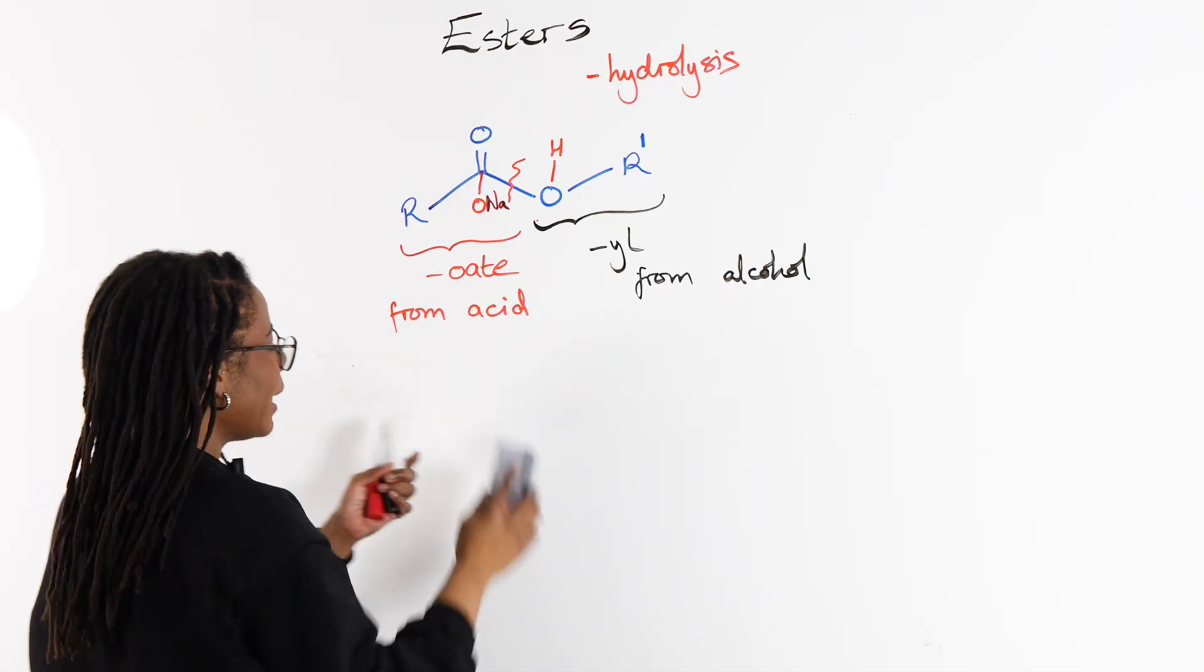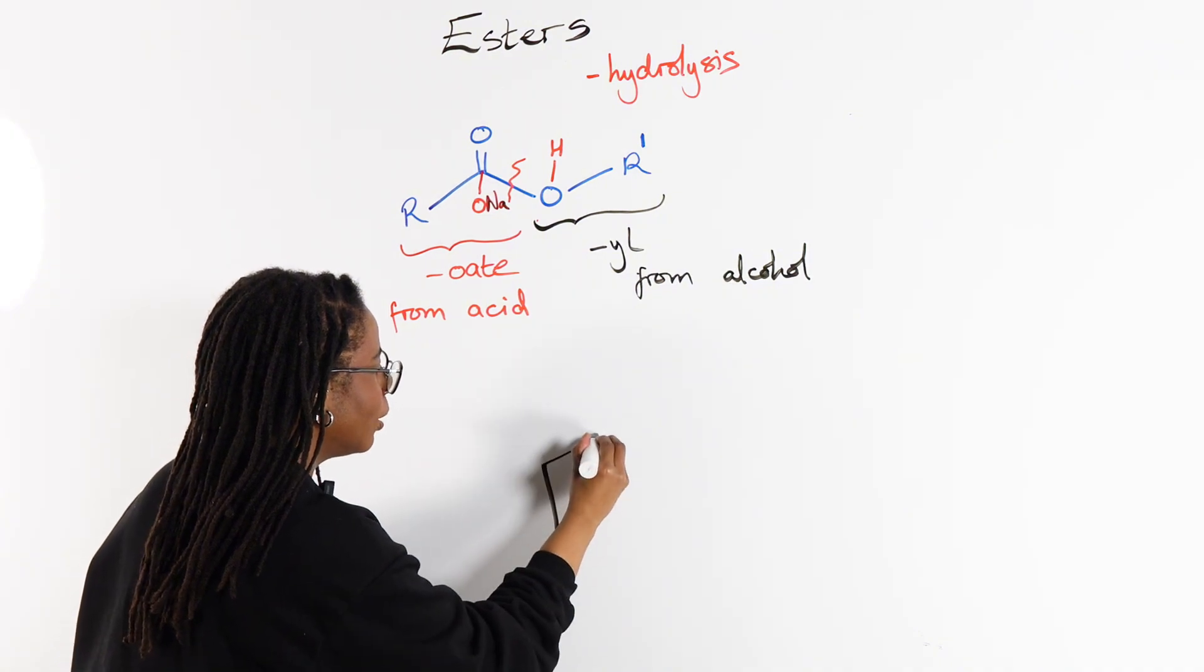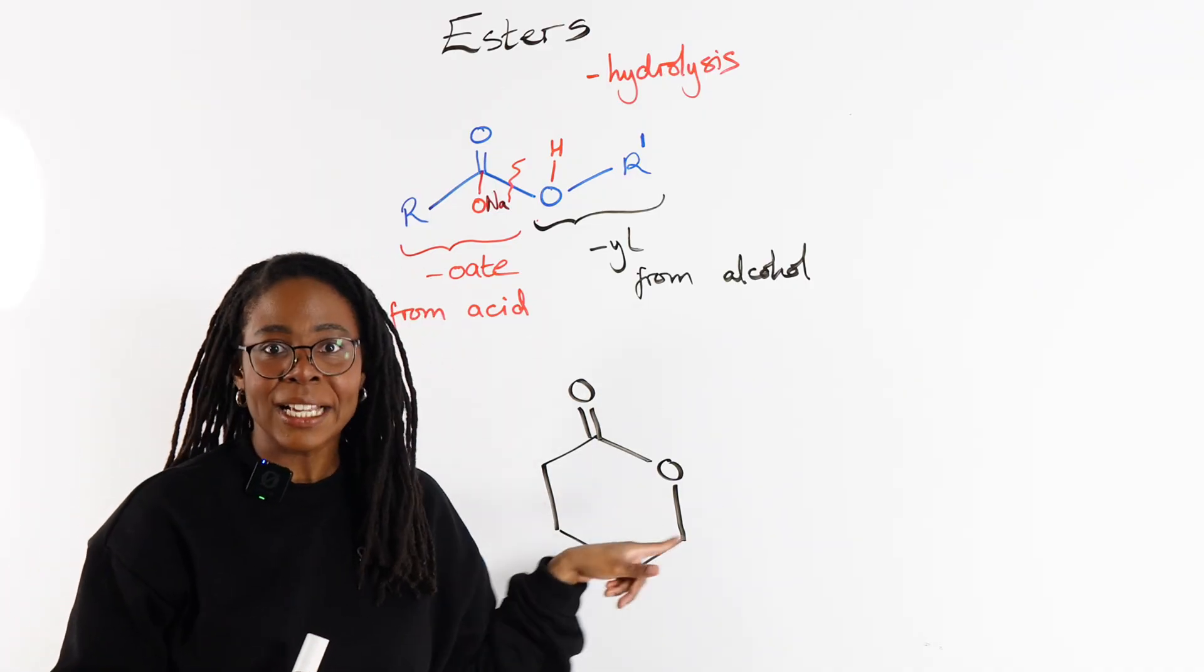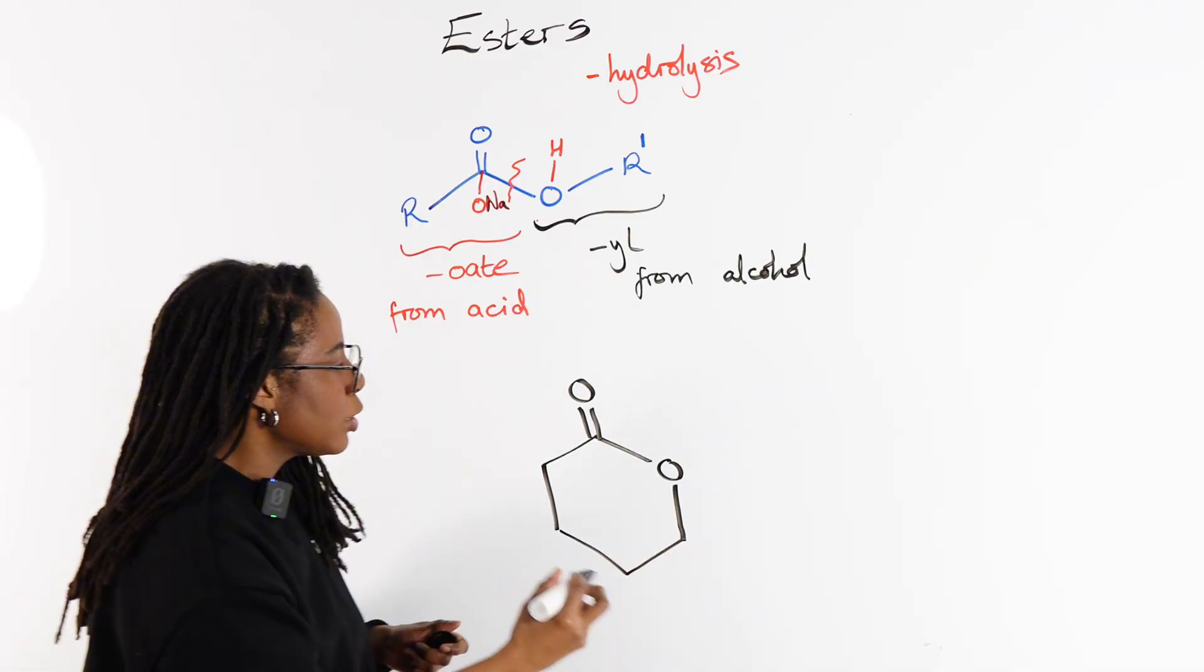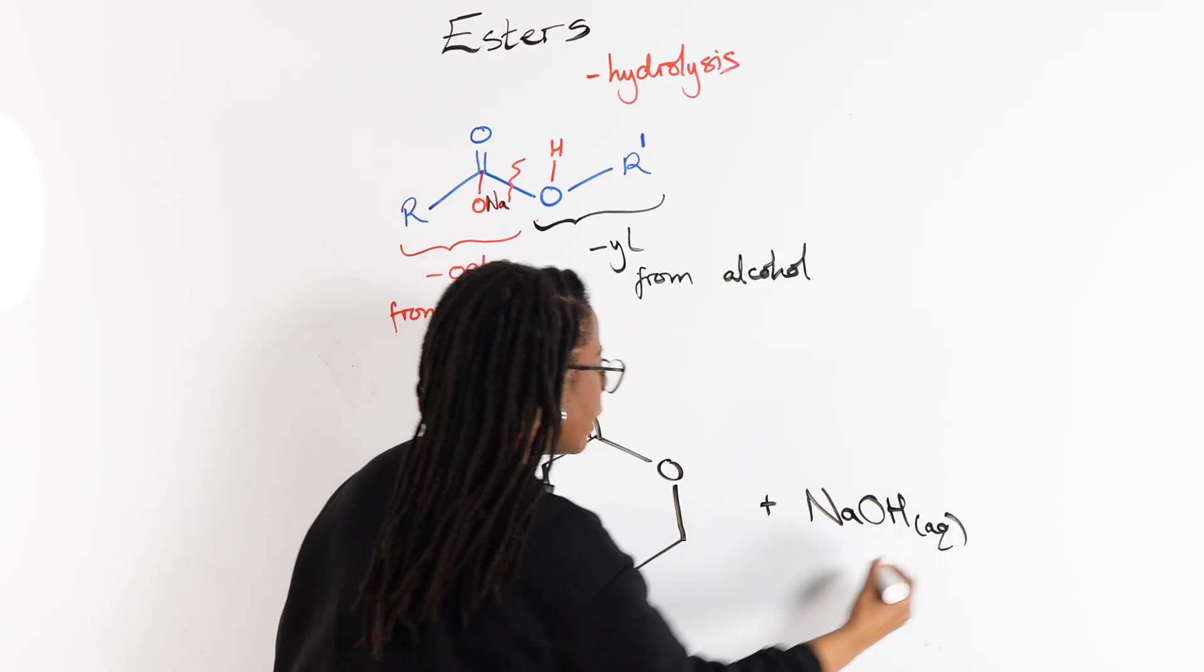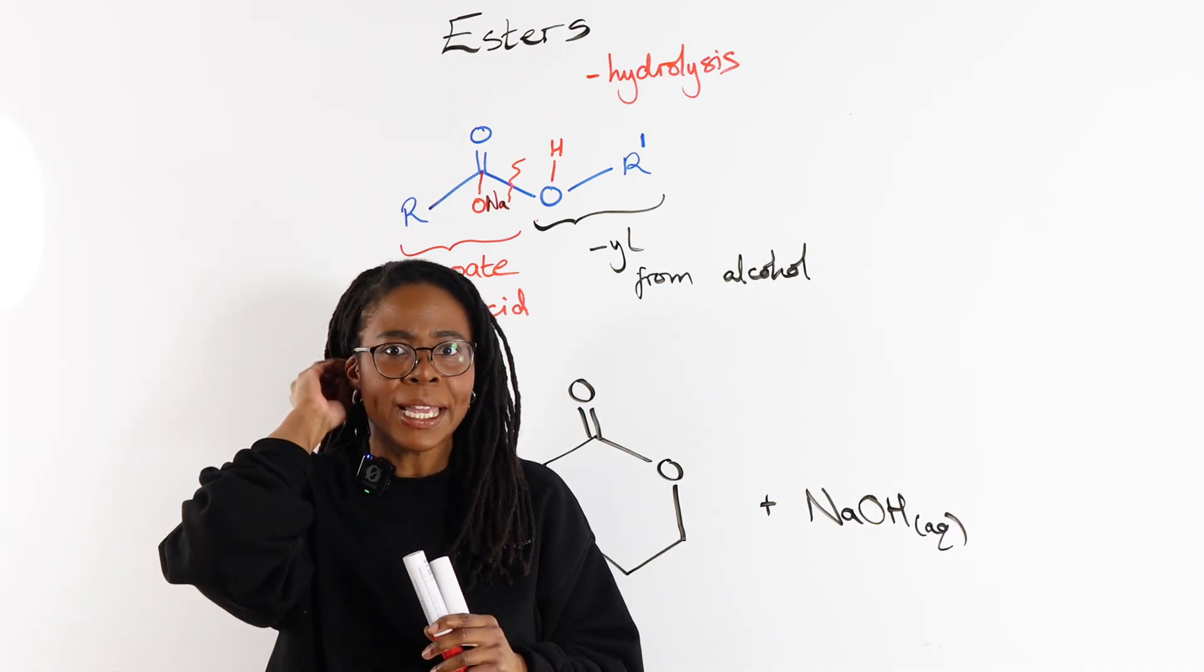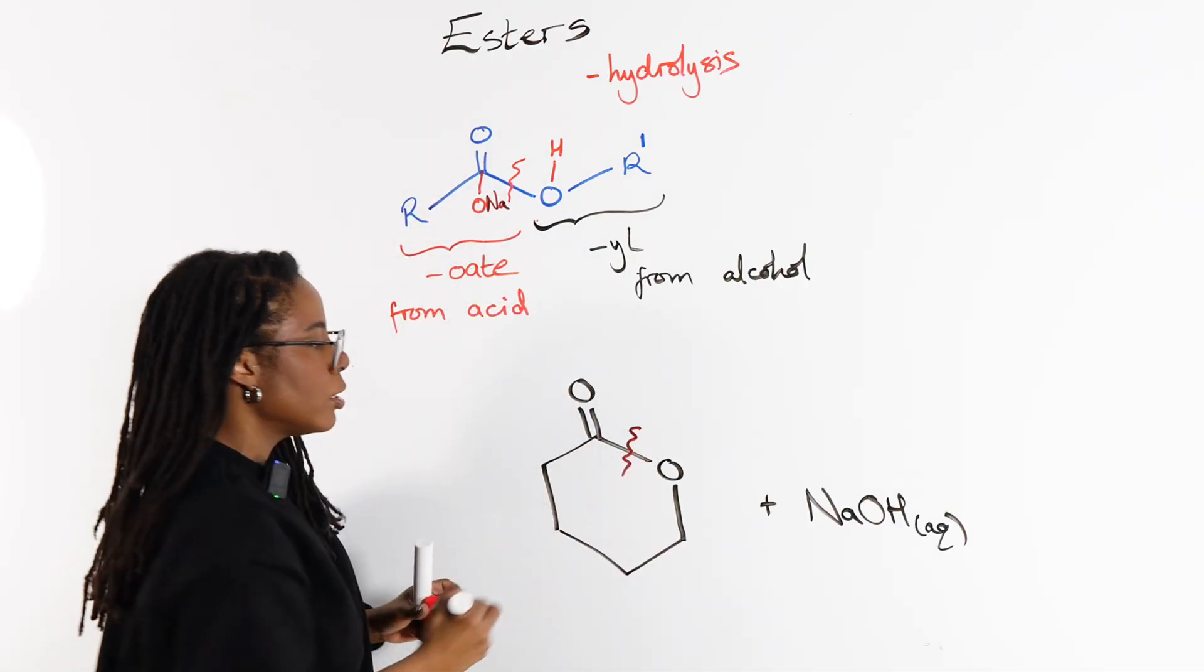Okay, are you scared yet? I hope not. So this is a cyclic ester—sometimes they're also called lactones. Let's say that we wanted to hydrolyze this in alkaline conditions, so we add aqueous sodium hydroxide, and they ask you for the product or products. Well, let's see. First thing that we are going to identify is where is our ester bond. Just as before, we're going to break the bond between the C double bond O and the O, so that is this bond over here.